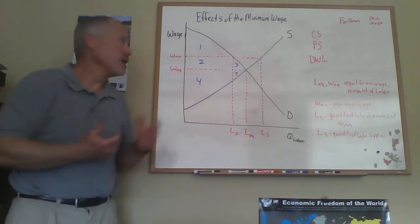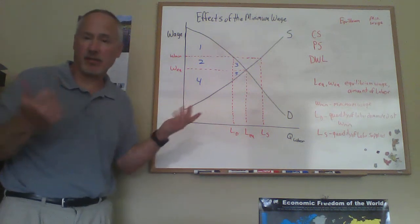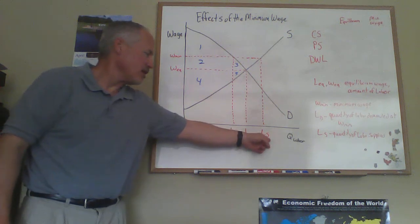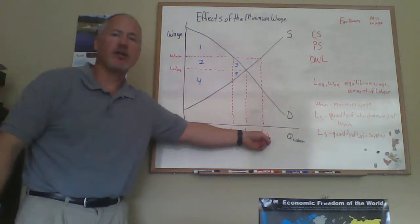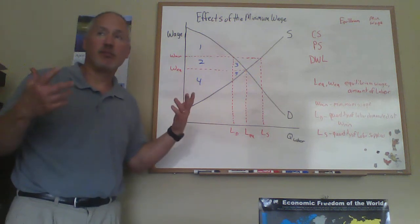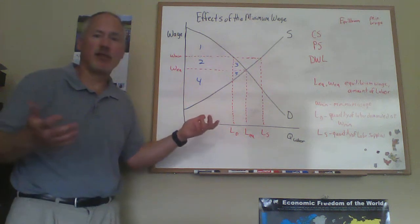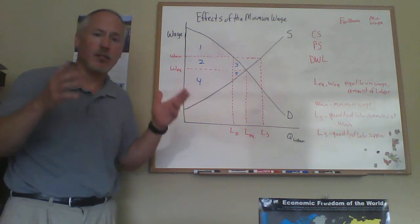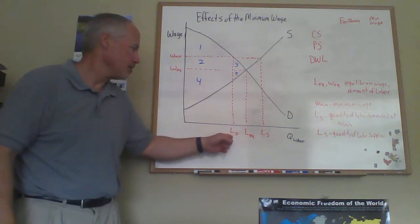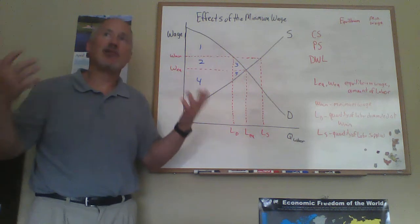Transactions in a market have to be voluntary, so we have to have a voluntary transaction taking place. When the market is not clearing, the short side of the market rules. LS would be the number of units of labor that people would be willing to supply at the minimum wage. LD is the amount of labor that firms are willing to hire. We have to have both a willing buyer and a willing seller, so the shorter side of the market — the smaller of these two quantities — determines the quantity in the market.